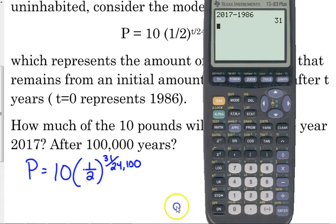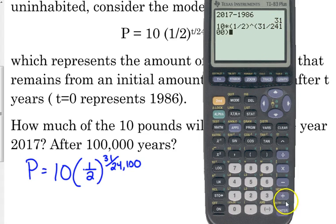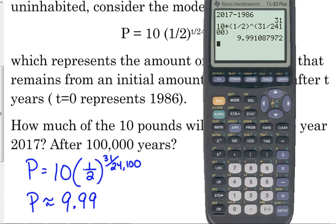So, let's see what that gives us. 10 times 1 half, you need to put it in parentheses. If it's in parentheses in your problem, you need to put it in parentheses in the calculator. To the, we need to put 31 over 24,100 in parentheses as well. Because, like I explained yesterday, with those problems that we were doing, if you don't put parentheses, it's going to raise it to that exponent, and then it's going to divide your answer by that number instead of doing it in the correct order.